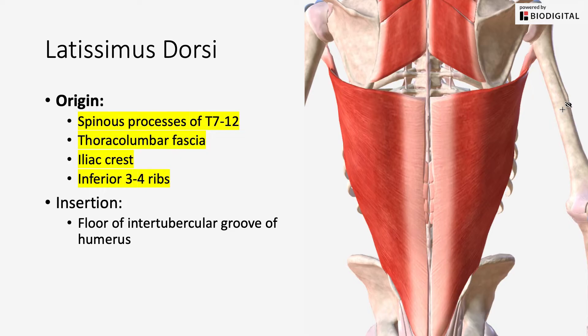Just like what the name describes, latissimus I believe means broad muscle, and dorsi refers to the dorsal aspect of your body — so the backside, the posterior side of your body.